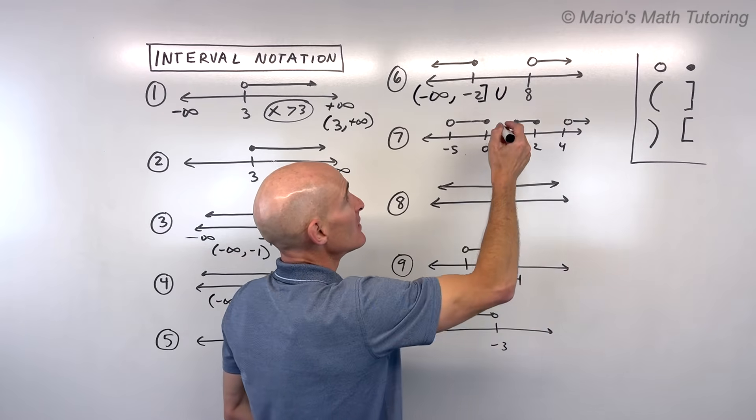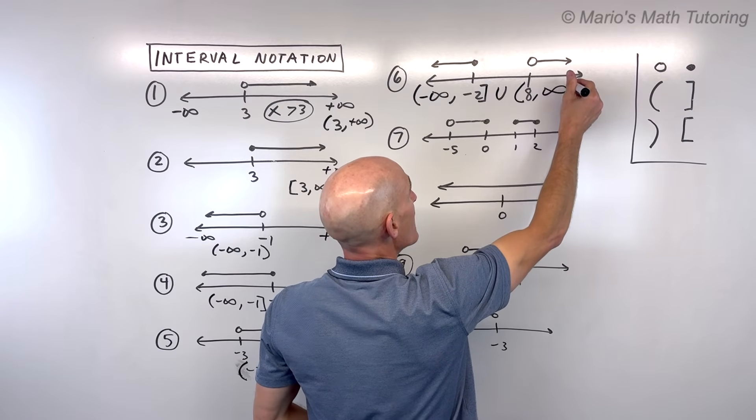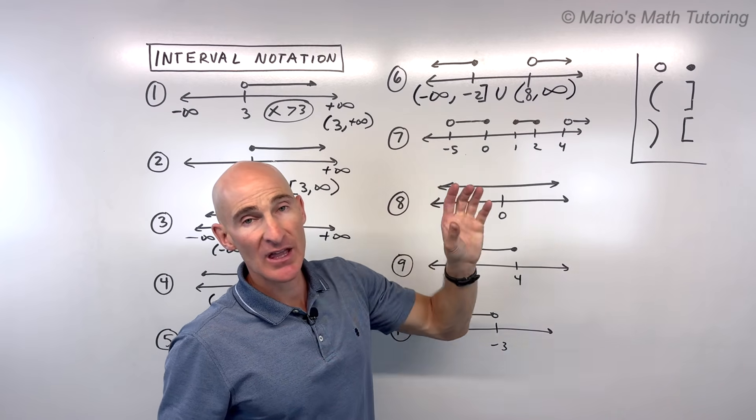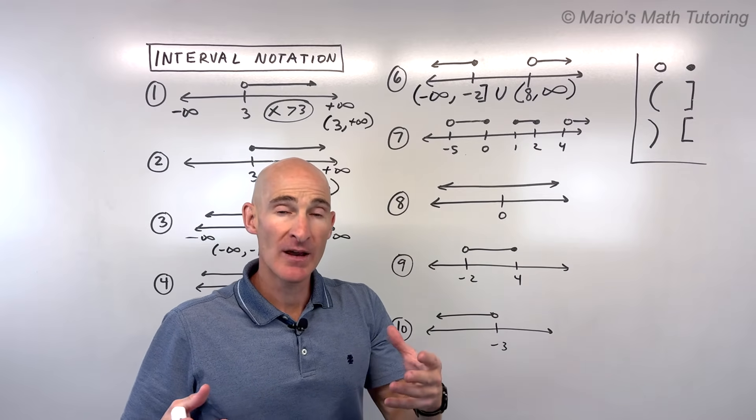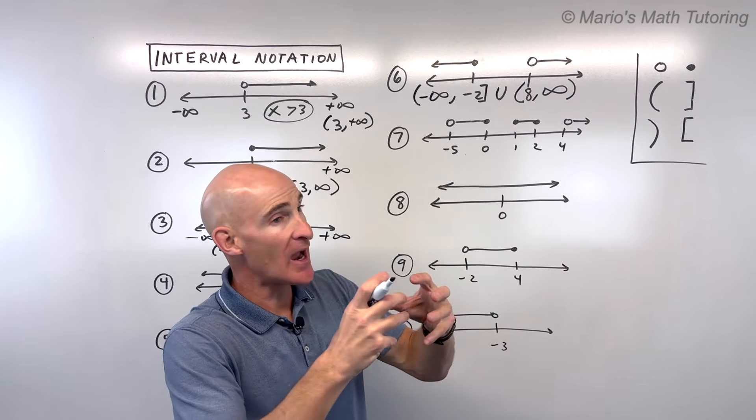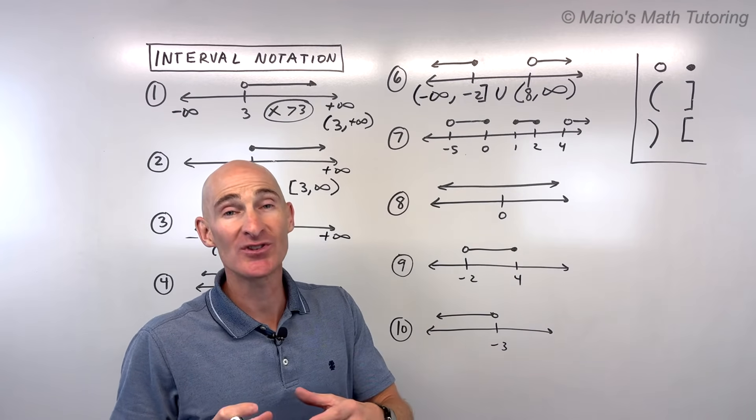U, that means union. Parenthesis, we don't want to include 8, all the way to positive infinity. It can never reach infinity. So when you have more than one interval, you have to put that U for union. Remember, union, we oftentimes use the word or, but or in math means both. So you're uniting or you're combining all of these data points, all of these data points. That's your solution set.